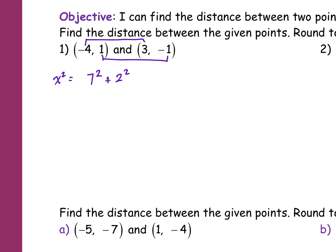So now I don't even have to think about that formula. If I just think how far it is between the X's and how far between the Y's, you guys got it. What's 7 squared? 49. What's 2 squared? 4. What's 49 plus 4? 53. Square root it. What's the square root of 53? 7.2.